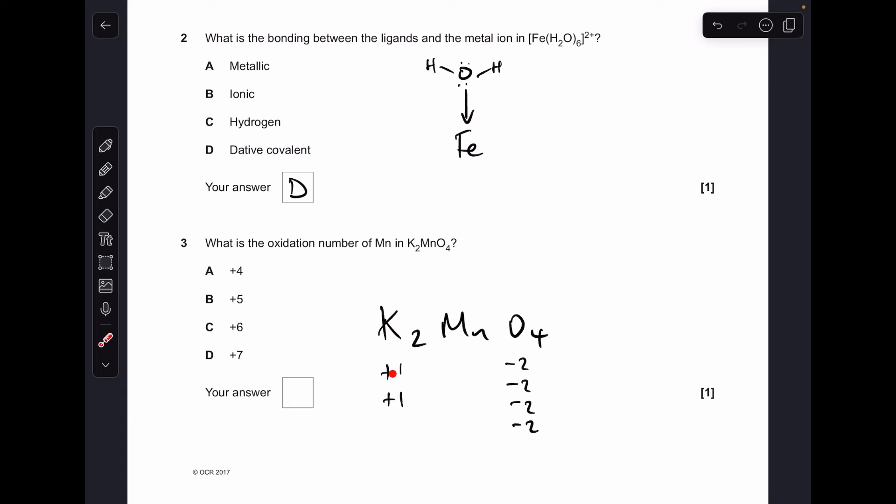Oxidation number of the manganese so each of those potassiums is +1 oxidation number, each of the oxygens is -2, so to keep this thing without any overall charge the manganese has to be +6 so the answer was C.